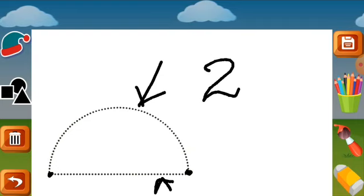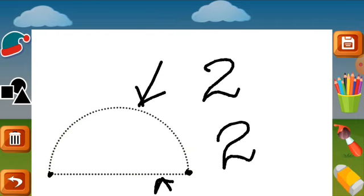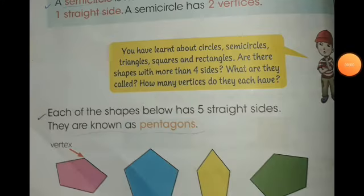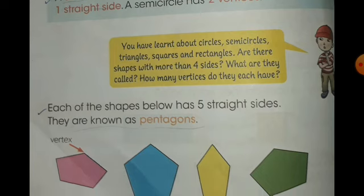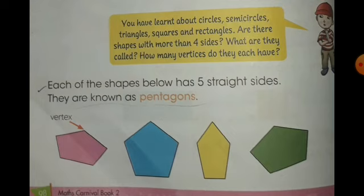Are there shapes with more than four sides? What are they called? How many vertices do they each have? Each of the shapes below has five straight sides. They are known as pentagons. Let's check the number of sides and vertices of pentagons.